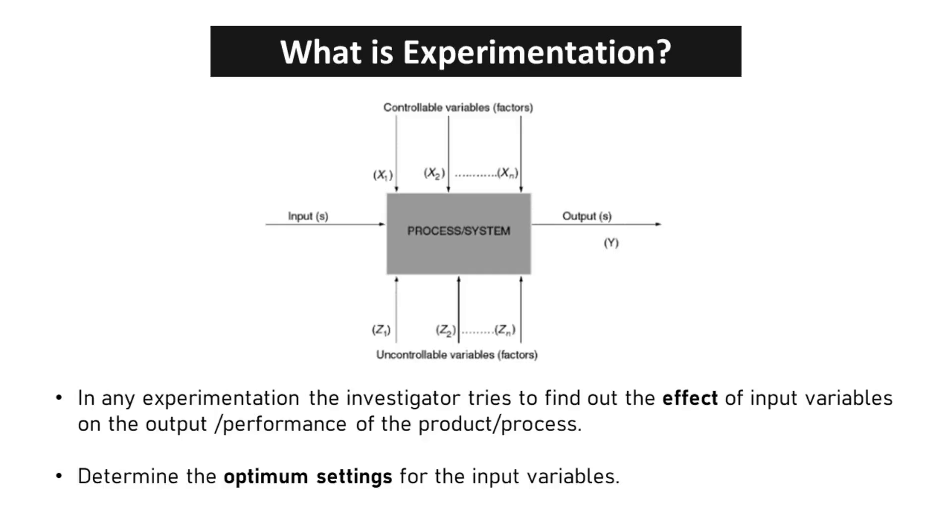In the process of experimentation, researchers aim to understand the impact of input variables on the performance or output of a product or process. This involves systematically varying the input variables and observing the corresponding changes in the output. The ultimate goal is to identify the optimum settings for the input variables that result in the desired output or performance.